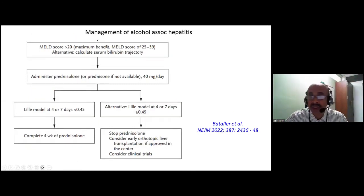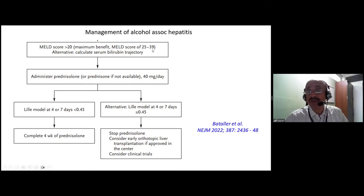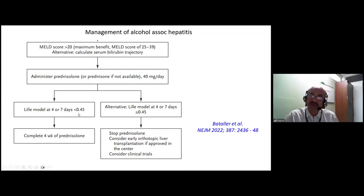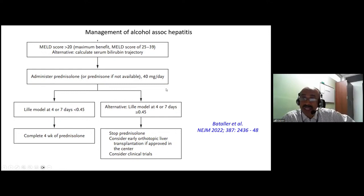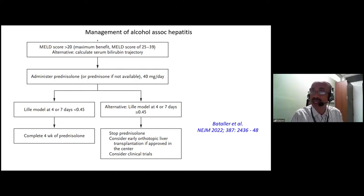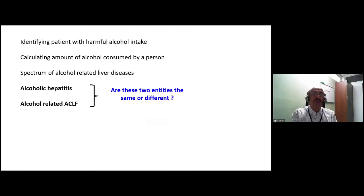The standard Western algorithm for severe alcoholic hepatitis: MELD more than 20 is a candidate for steroid therapy (maximum benefit MELD 25-39). Administer prednisolone 40 mg/day and assess bilirubin response at day 4 or 7. If Lily score less than 0.45, complete four weeks. If more than 0.45, stop prednisolone and consider early liver transplantation if approved at the center, or consider clinical trials. The speaker emphasized this is standard Western teaching, but he does not routinely practice this due to concerns about infections in Indian patients.